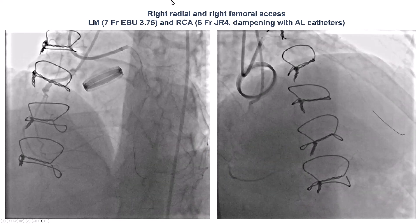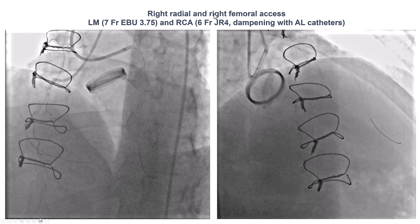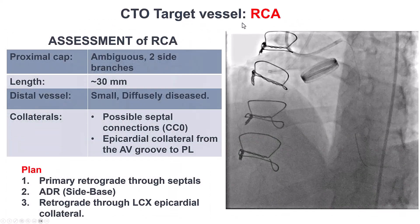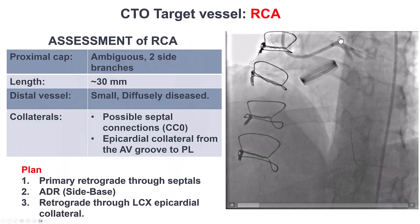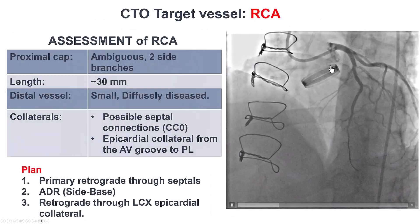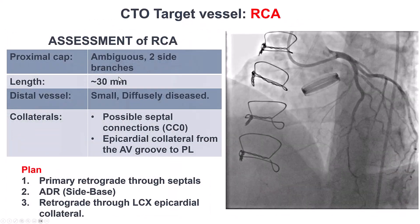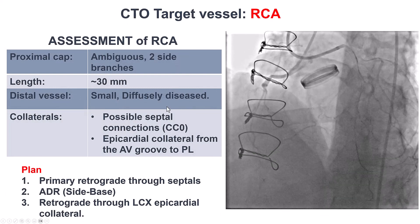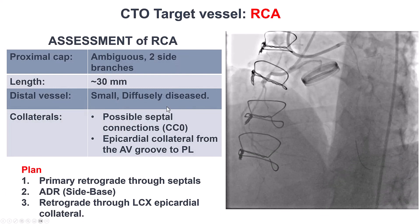This was done through radial and femoral access. The assessment: ambiguous cap, 30-40 millimeters length, diffusely diseased distal vessel.